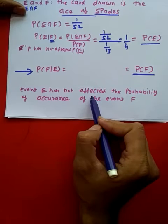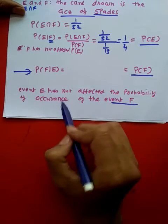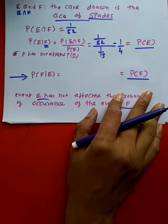Event E has not affected the probability of occurrence of event F, hence they are independent.